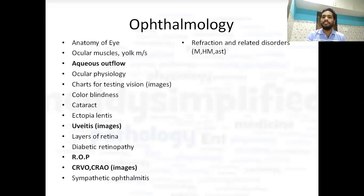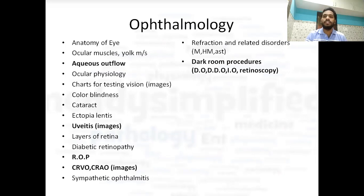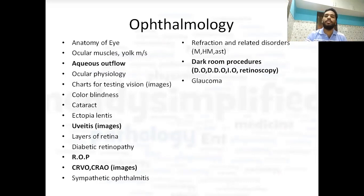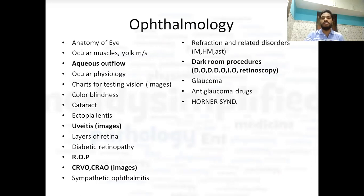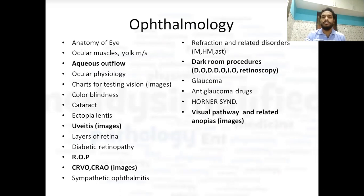Sympathetic ophthalmitis. Then refraction and related disorders — myopia, hypermetropia, and astigmatism — a very important topic from which questions are asked every year. In dark room procedures including direct ophthalmoscopy, distant direct ophthalmoscopy, indirect ophthalmoscopy, and retinoscopy — the distance from which these procedures are done and how images are formed is very important. Glaucoma is a very important topic from ophthalmology. Anti-glaucoma drugs are separately mentioned because questions can be asked from ophthalmology and from pharmacology as well. Then Horner's syndrome, visual pathways and related anopia — bilateral hemianopia, temporal hemianopia, pie in the sky, pie in the floor — images are important.